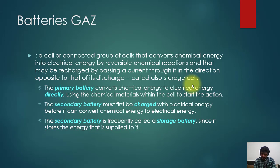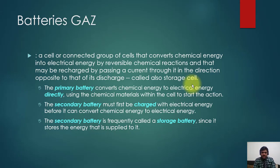This is called a storage cell. Primary batteries convert chemical energy to electrical energy directly, using the chemical material within the cell to start the action. Secondary batteries must first be charged with electrical energy before they can convert chemical energy to electrical energy. The secondary battery is frequently called a storage battery since it stores the energy supplied to it. So there are two types: primary batteries and secondary batteries.